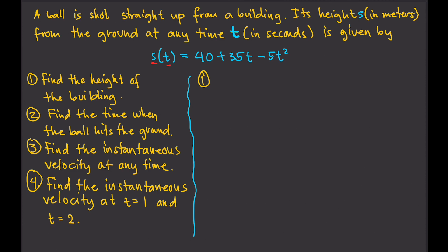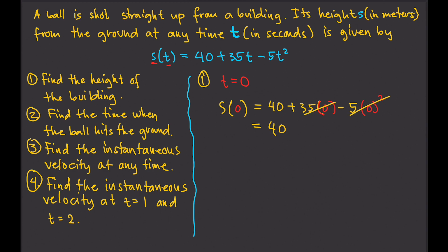Therefore, we can solve this by letting t equal zero, because our argument is that when t is zero, the ball is at the top of the building. So we substitute into our equation: s of zero equals 40 plus 35 times zero minus 5 times zero squared. That's just equal to 40, because both those terms cancel out to zero. Therefore, the height of the building is 40 meters.